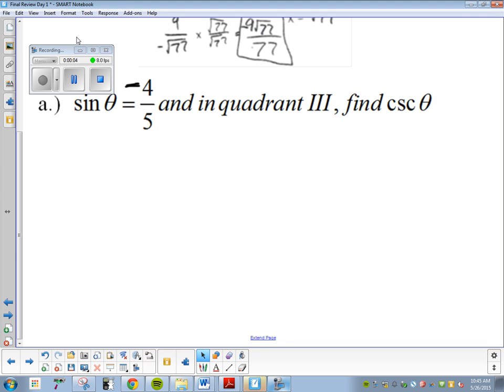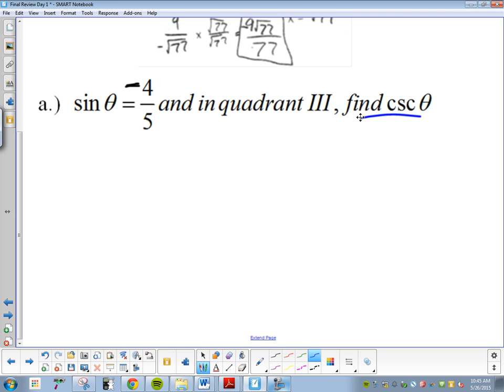Okay, so they gave us sine of theta and they're asking us to find cosecant, so we're doing x, y, r. Looking at this problem, they told us sine is negative four-fifths. Sine means y over r.